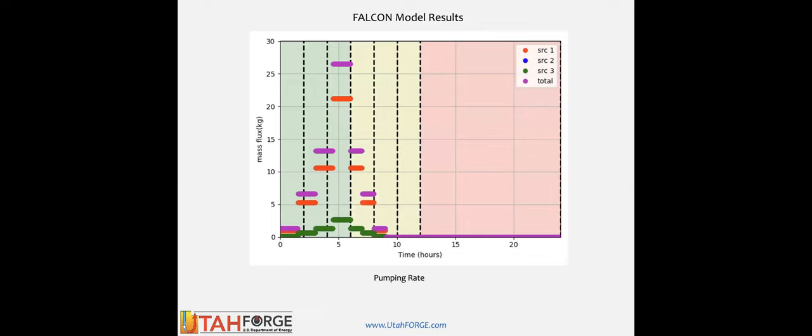Now some quick model results from Falcon, then Excite. Based on well hydraulics and thermal hydraulics calculations, about 80% of the flow goes into the open hole toe and each of the two perforated zones takes 10% each. In the model, source one is the open hole, and two and three are the two perforated zones. Based on the slug tests and earlier stimulation shear testing, we fit the data to obtain initial fracture permeability of approximately 10 to the minus 16 meters squared — about a tenth of a millidarcy.